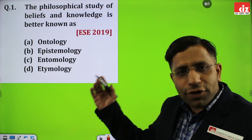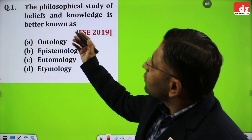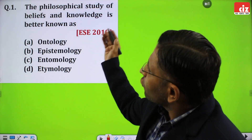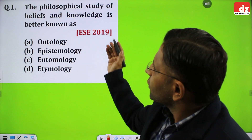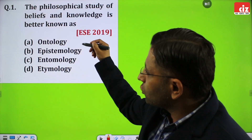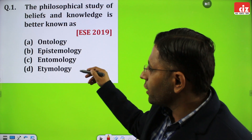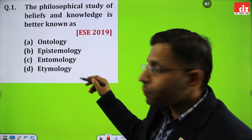Taking the first question of ethics: the philosophical study of beliefs and knowledge is better known as — the given options are ontology, epistemology, entomology, and etymology.